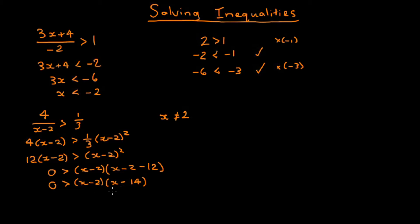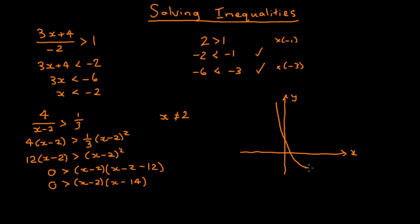Now we have a quadratic polynomial, with roots at x equals 2 and x equals 14. If we graph that — drawing some axes with an x-axis and y-axis — we get a parabola cutting the x-axis at 2 and at 14. We want the values of x where this expression is less than 0, meaning the part of the curve below the x-axis, which is between 2 and 14. So our answer is 2 is less than x is less than 14.